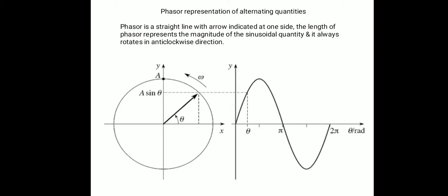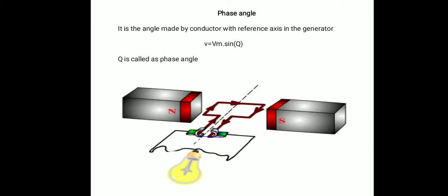In summary, remember three points about the phasor. First, a phasor is a straight line. Second, the length of the phasor is equal to the peak value of the sinusoidal quantity. Third, an arrow is indicated at one side of the phasor which represents the direction of rotation, and that direction is anticlockwise.